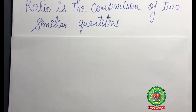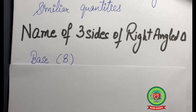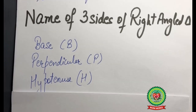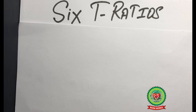Let us recall the names of the three sides of a right-angled triangle. The three sides of a right-angled triangle are: base, perpendicular, and the hypotenuse. Now we are going to discuss the different ratios that can be formed using the base, perpendicular, and hypotenuse. In all, there can be six ratios formed using the three sides of a right-angled triangle, and those six ratios are called the six trigonometrical ratios.